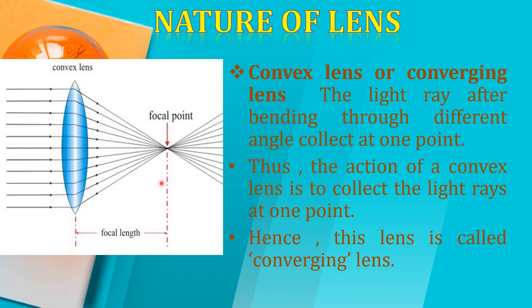The nature of a convex lens is converging, and the nature of a concave lens is diverging. First of all, we consider the convex lens. Convex lens is the converging lens. The reason is that the rays after bending through different angles collect at one point. Thus, the action of a convex lens is to collect the light rays at one point, and hence this lens is called a converging lens.